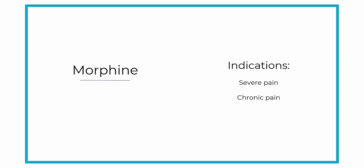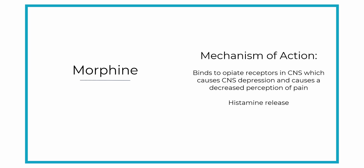Morphine is used to manage severe pain as well as chronic pain. The mechanism of action is that it binds to the opioid receptors in the central nervous system, causing the CNS to become depressed. That depression leads to less sensation and fewer neurotransmitters transmitting pain, resulting in a decreased perception of pain.